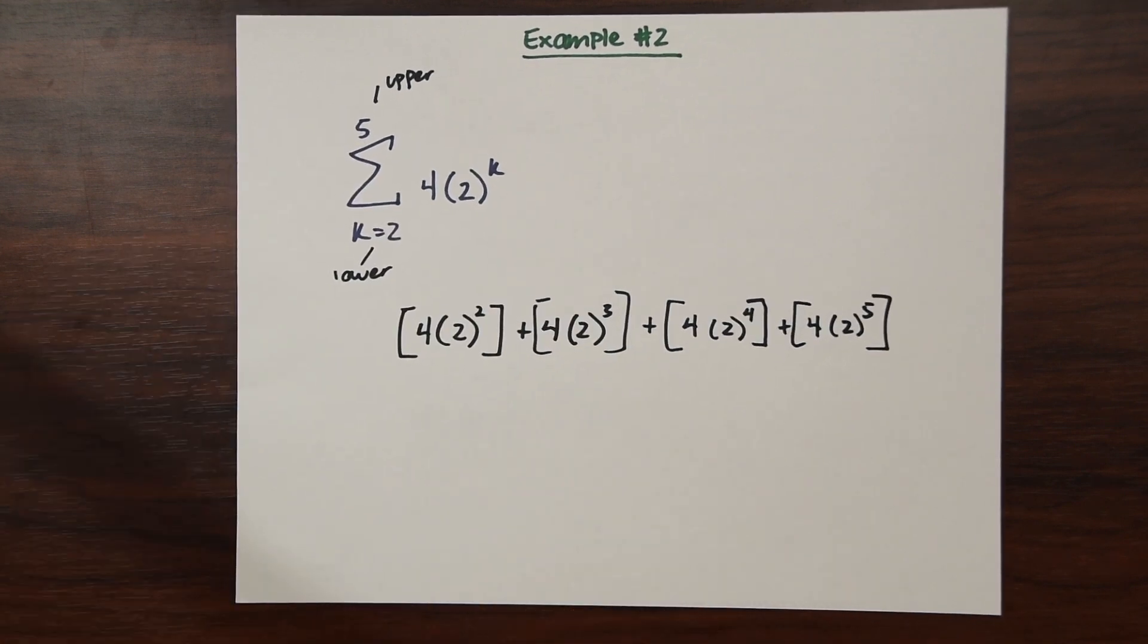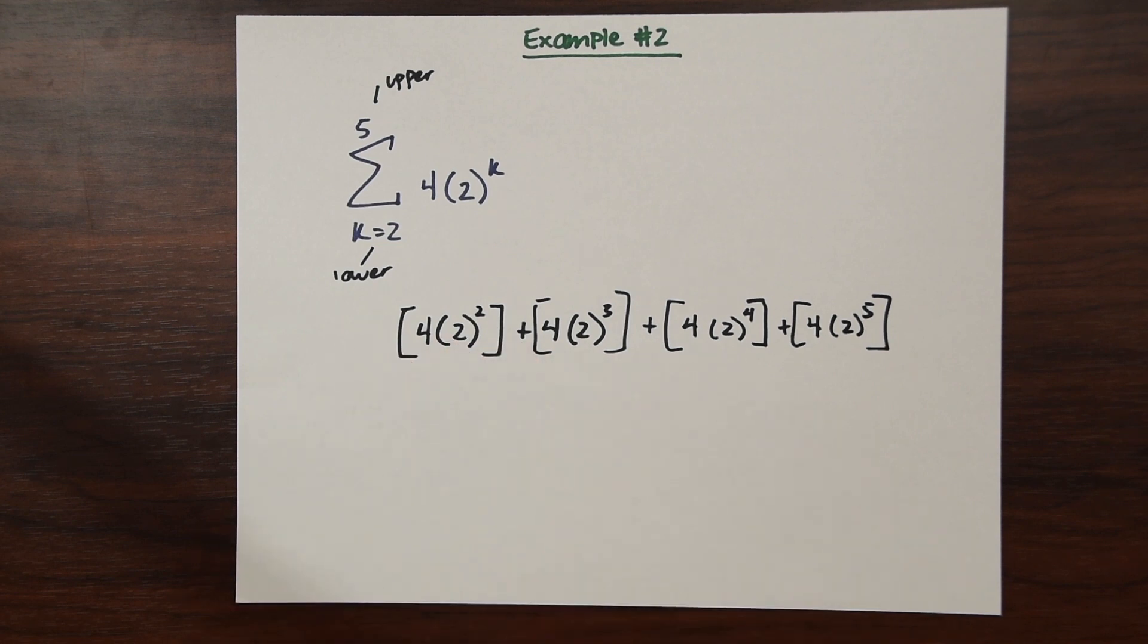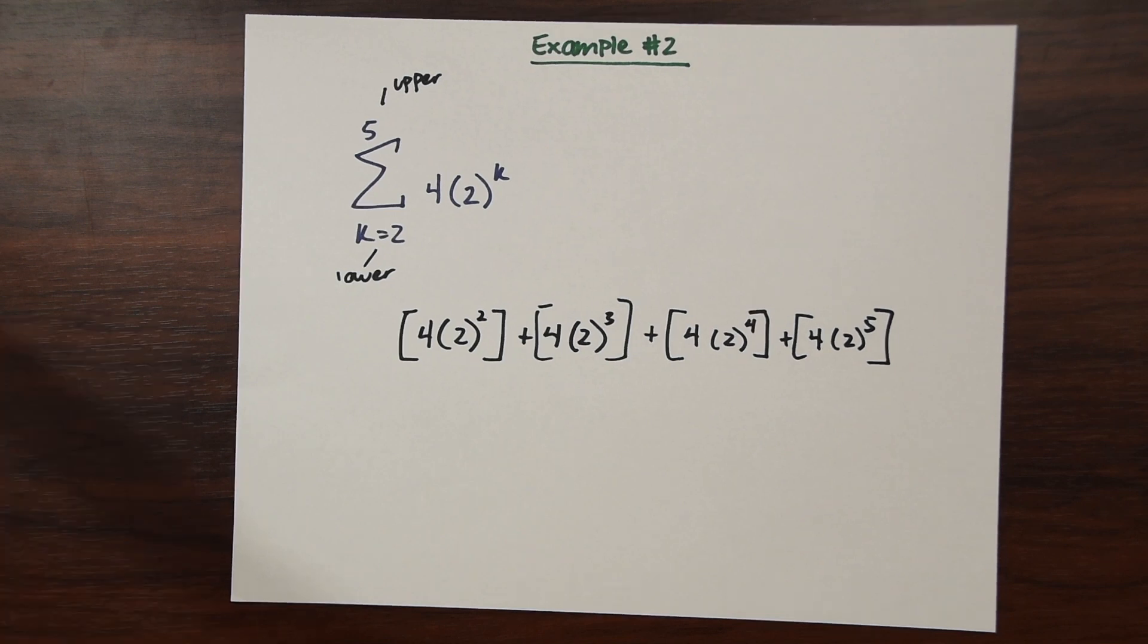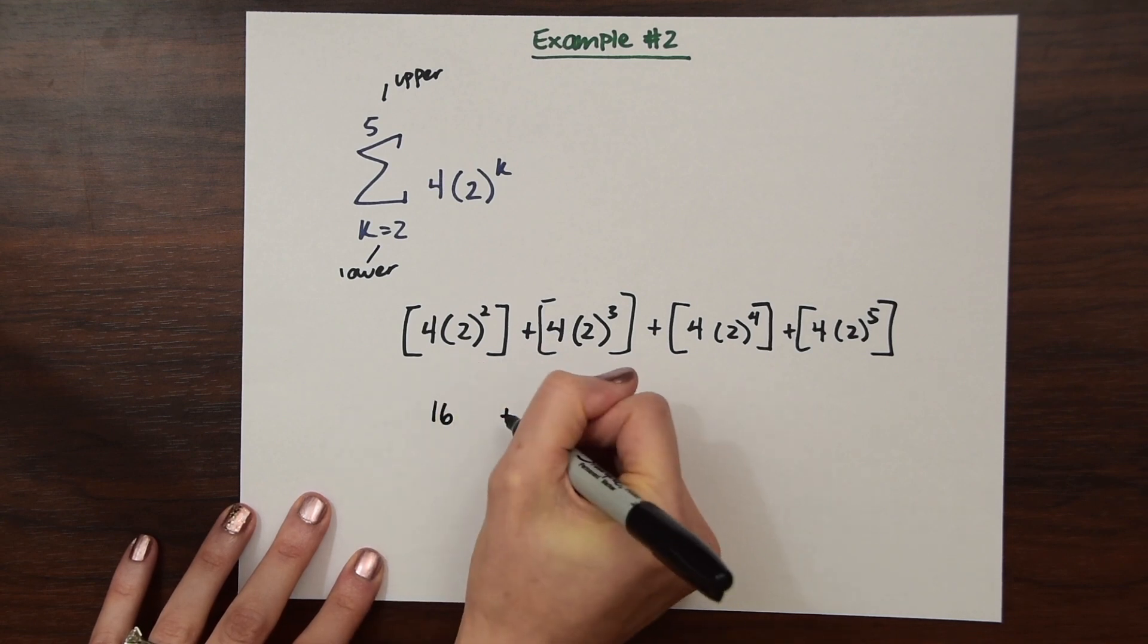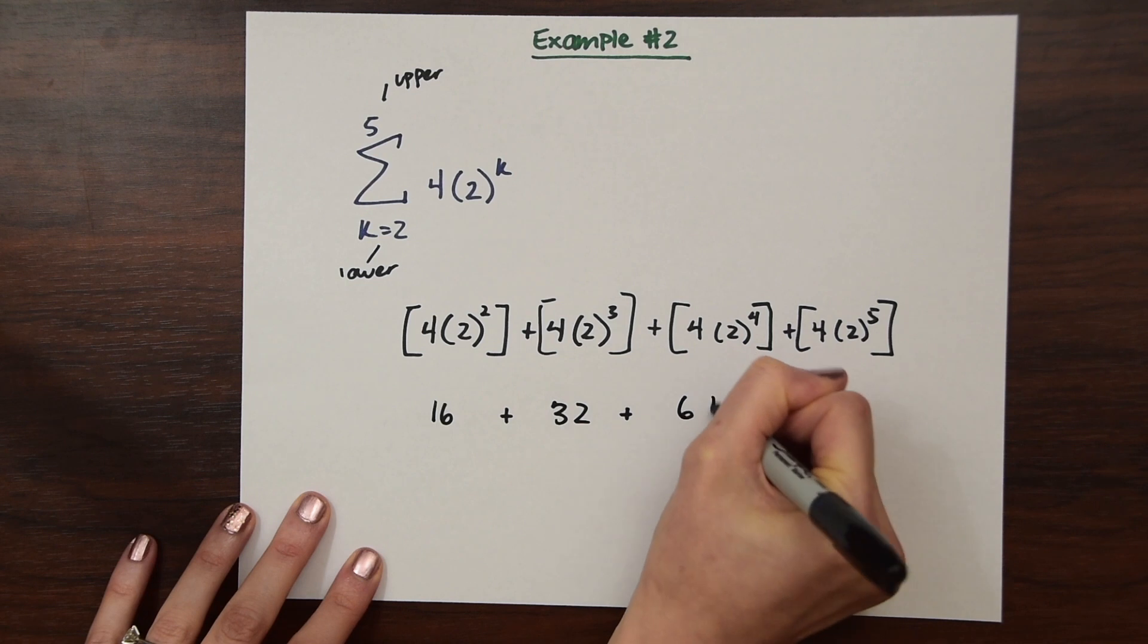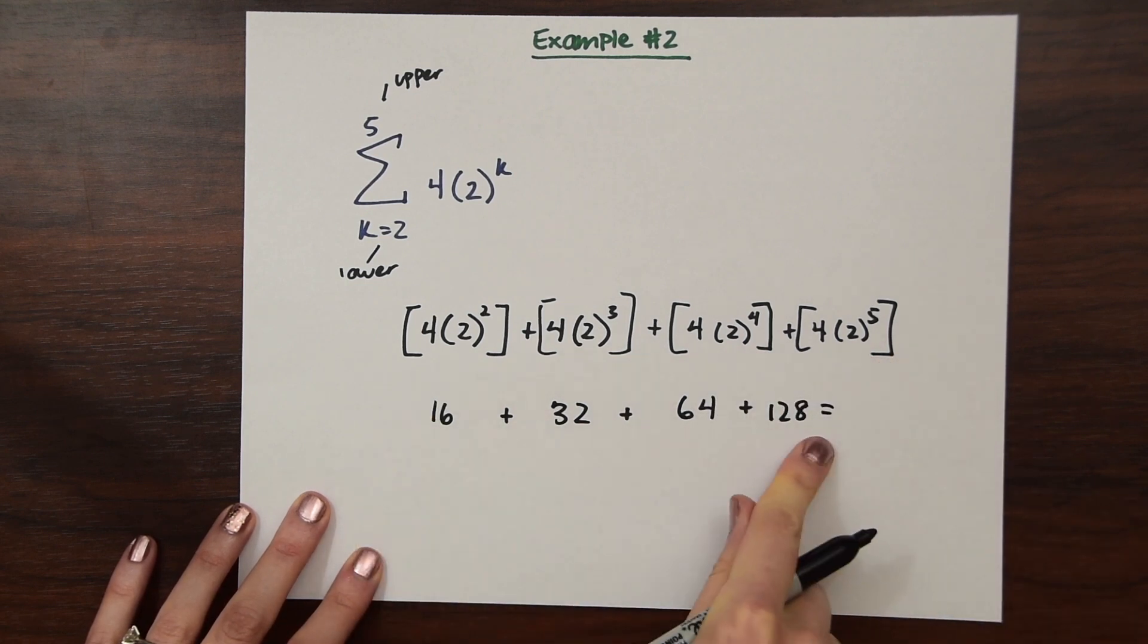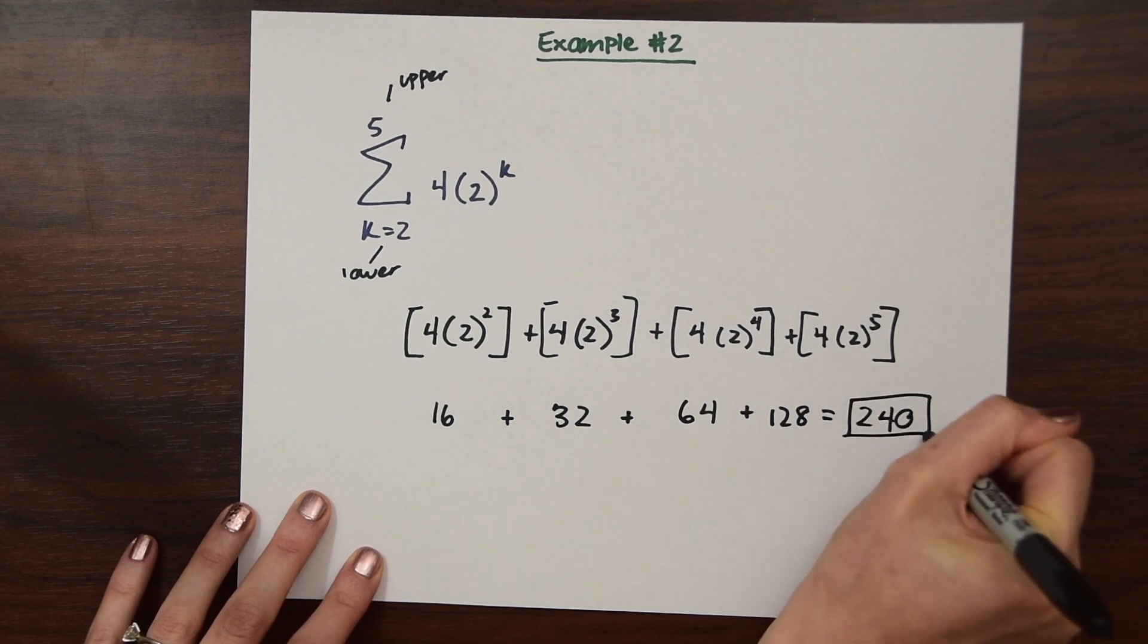And then again, we could just calculate each little group and then add them all together. So you can use your calculator. So if you plug these into your calculator, you're going to get 16 plus 32 plus 64 plus 128. And when you sum these all together, you're going to get 240. And that's our answer.